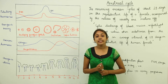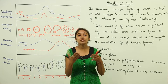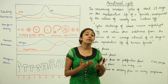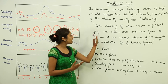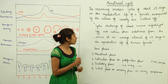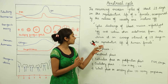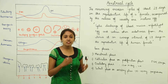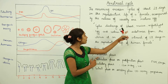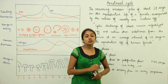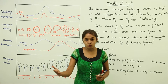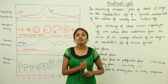When a girl attains the age of puberty — when she becomes sexually mature at the age of 13 to 14 years — this menstrual cycle begins. Menstruation is defined as the cyclic discharge of blood, mucus, unfertilized egg, and certain other substances from the uterus at an average interval of 28 days in the reproductive life of a human female.